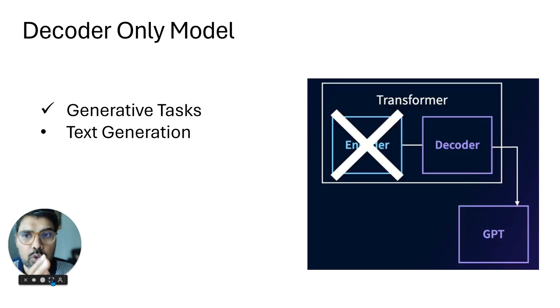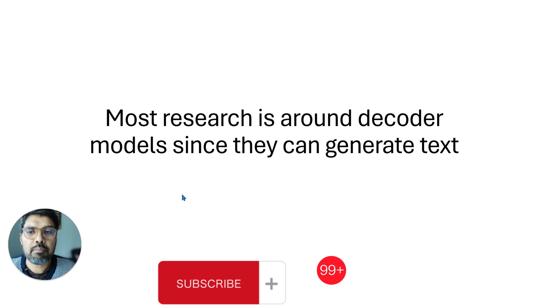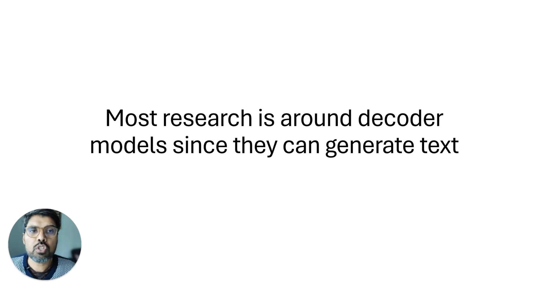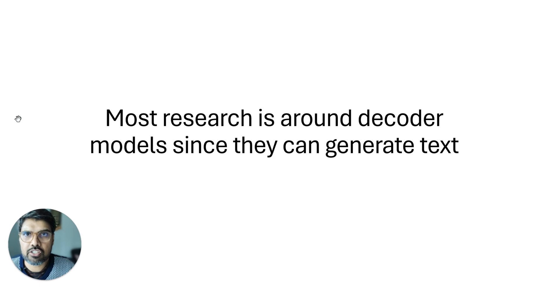Decoder models are good for generation tasks, and most research has focused on them because they can generate text, making them useful as chatbots or virtual assistants. Transformers are made of layers of encoders and decoders, and depending on the task, we can use whichever type we want. This gave you a brief overview of encoder and decoder components and how to use them in LLM applications. See you in the next video.